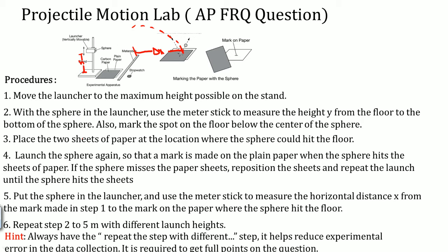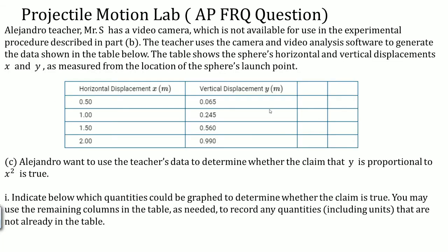Sometimes you want to say repeat step two through five or step whatever to whatever, like say ten times. This will help reduce error. Because if you look here, they did it four times. As you do it more, you're going to get better and better measurements.